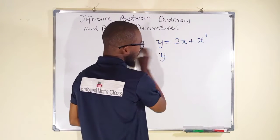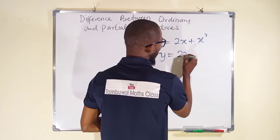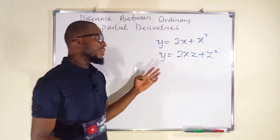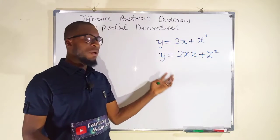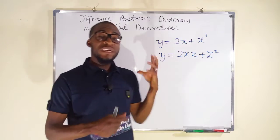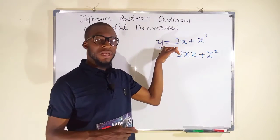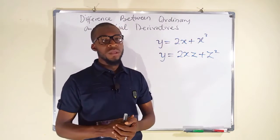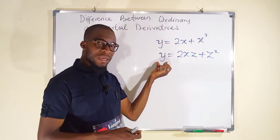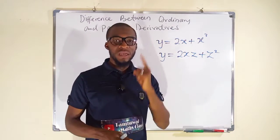Other times you may have an equation in this form: y equals 2xz plus z squared. In this case, y depends on x and z. So ordinary derivative only occurs when the dependent variable depends on a single variable, but partial derivative occurs when the dependent variable y depends on more than one variable.